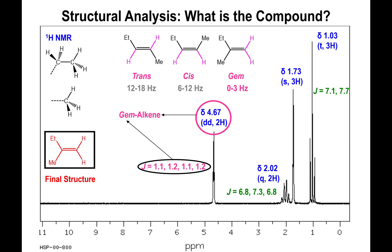In summary, by combining all spectral data: the mass spectrum gave the molecular formula C5H10; the IHD indicated a double bond or ring; the IR confirmed an alkene with peaks at 3076 and 1650 cm⁻¹; and the carbon and proton NMR provided the full structure, including coupling constants that identified the geminal alkene. I have one more example to go through, which I'll save for the next video.